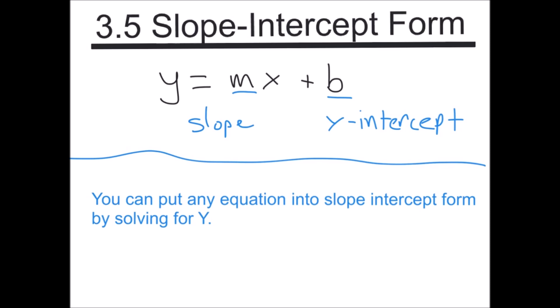It gives us the slope and the y-intercept. The slope is always the number with x, so here m is the slope, and your y-intercept is b, the number without x. The slope of the line is how the line is leaning, and the y-intercept is where the line crosses the y-axis. That's basically a slope and a point, and if you have a slope and a point, you know everything you need to know about a line. You can graph it and you can write the equation.